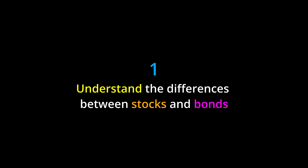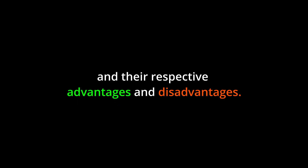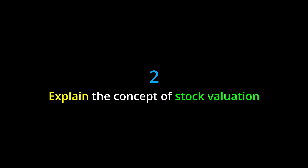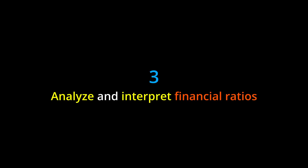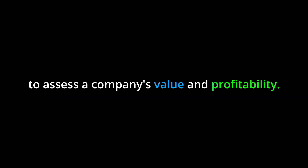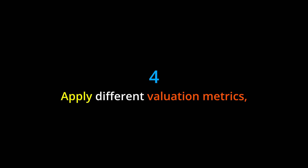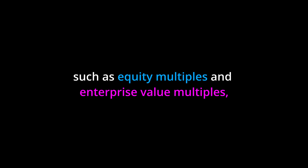Learning objectives: By the end of this chapter, you should be able to: one, understand the differences between stocks and bonds and their respective advantages and disadvantages; two, explain the concept of stock valuation and the use of the P/E ratio and the P/B ratio; three, analyze and interpret financial ratios to assess a company's value and profitability; four, apply different valuation metrics such as equity multiples and enterprise value multiples to evaluate stocks.